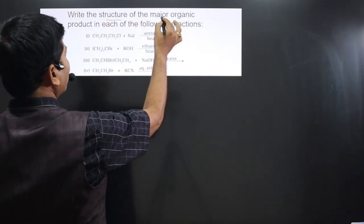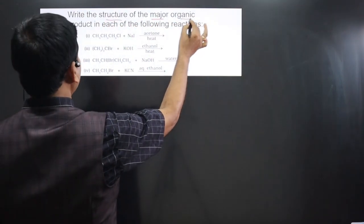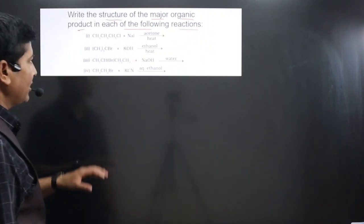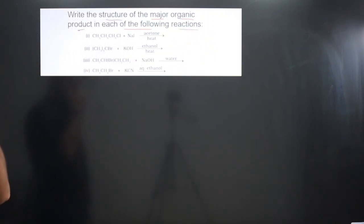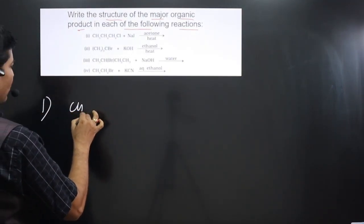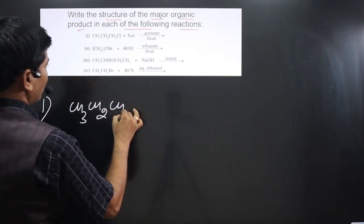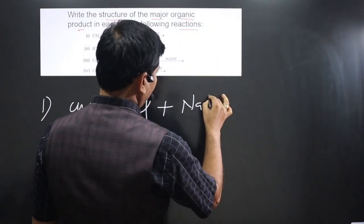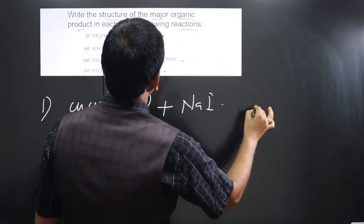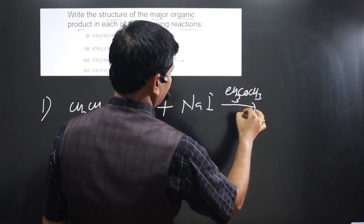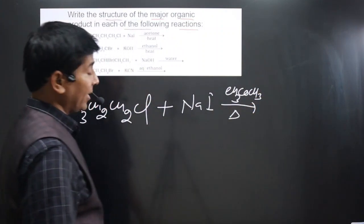The question says: write the structure of the major organic product in each of the following reactions. In these chemical reactions we have to write the product. The first reaction is CH₃CH₂CH₂Cl reacting with NaI in acetone (CH₃COCH₃) with heating. The acetone is acting as a solvent.